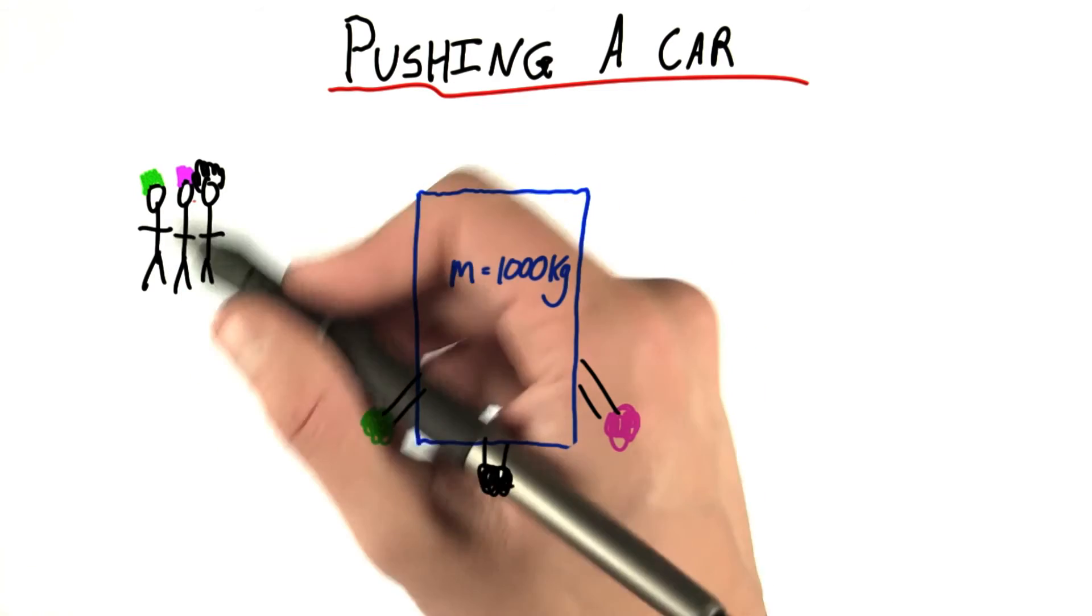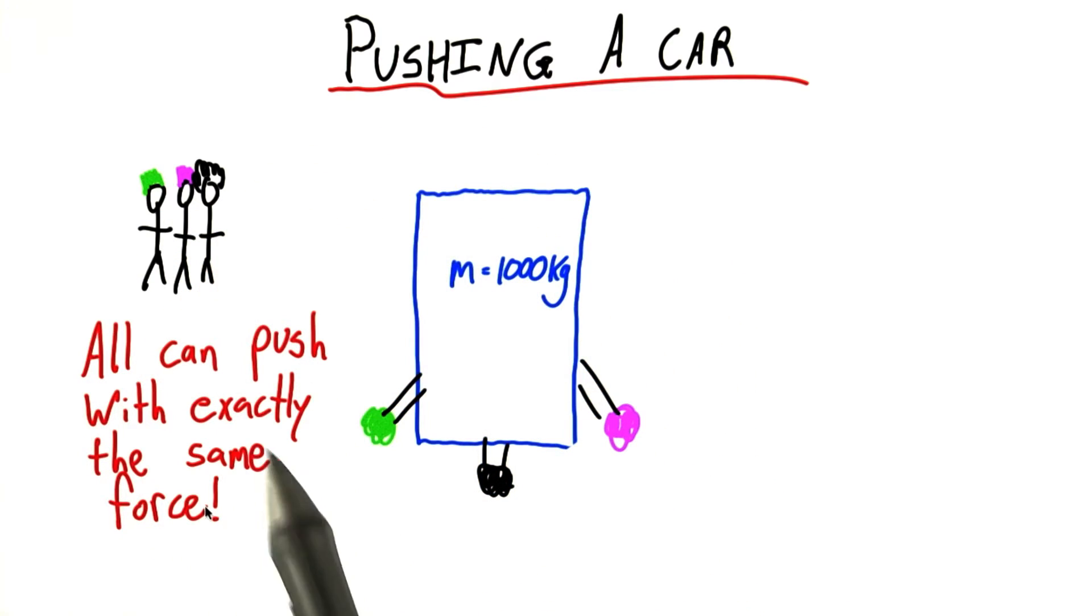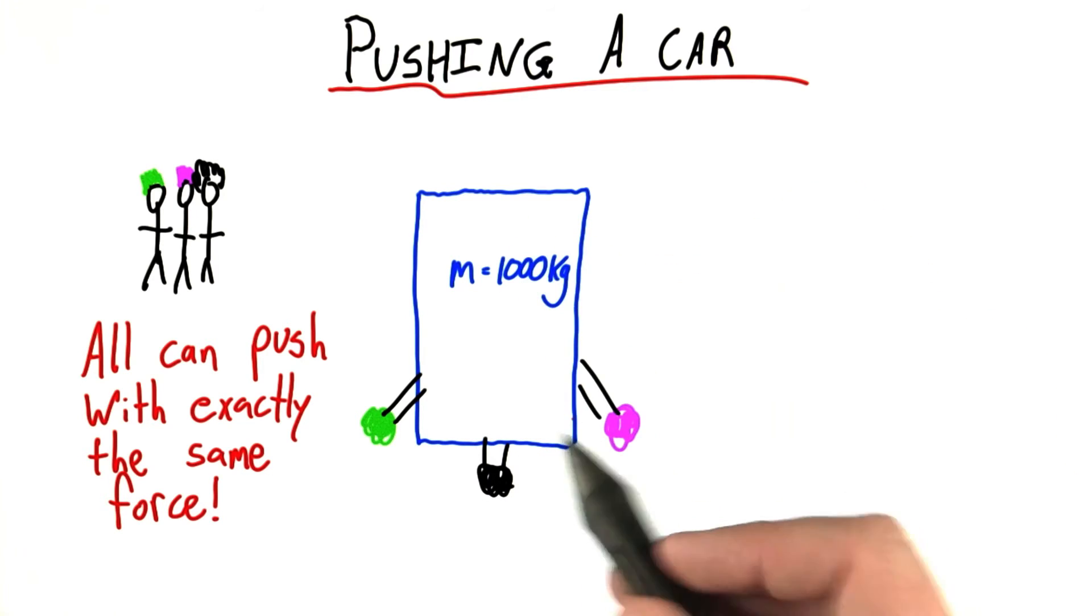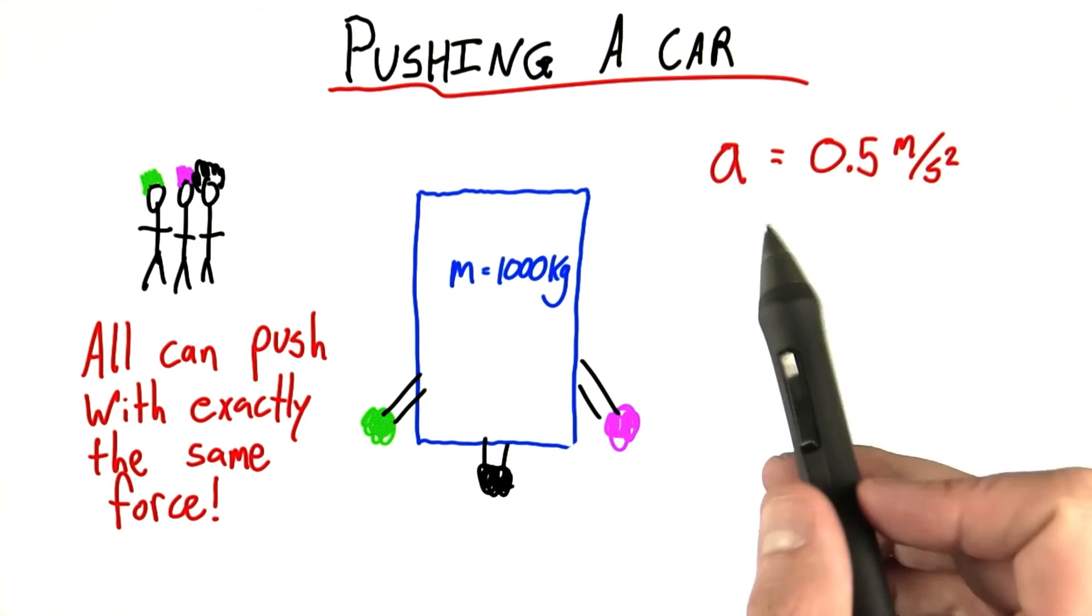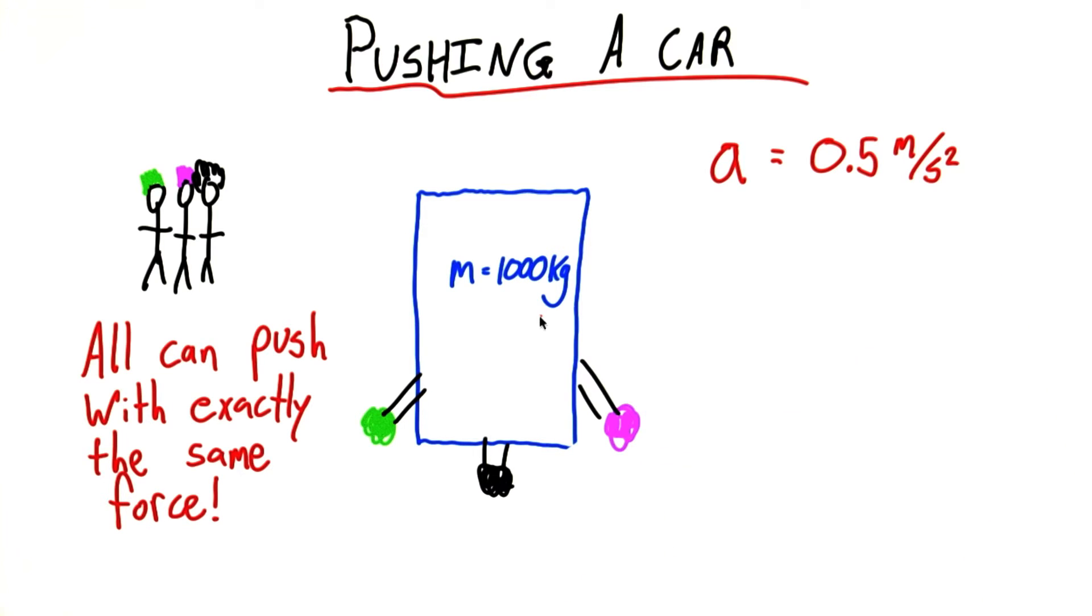An interesting fact about this group of friends is that they can all push with exactly the same force. When they all push on this car at the same time with this exact same force, the acceleration of the car is 0.5 meters per second squared.